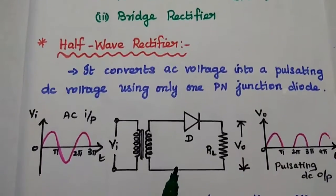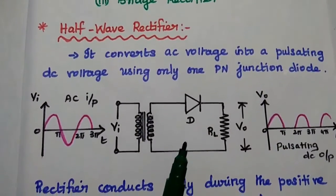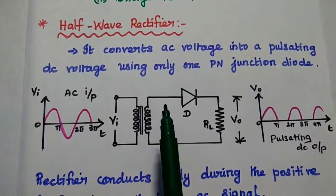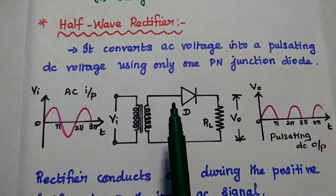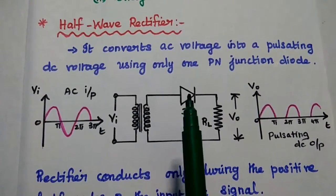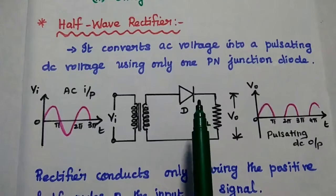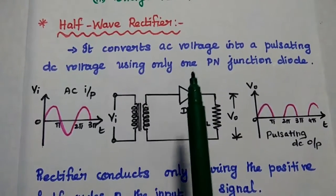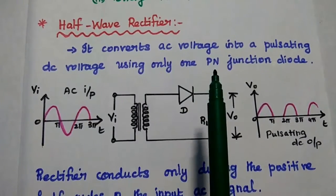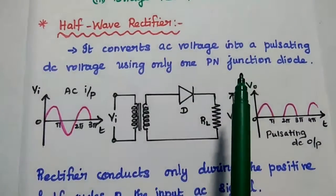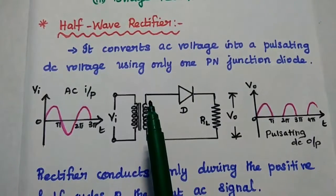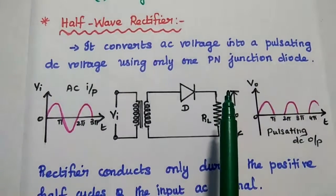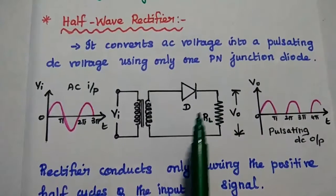Let's start with the half wave rectifier. In this half wave rectifier, we are going to use only one PN junction diode. It converts AC voltage into a pulsating DC voltage using only one PN junction diode.